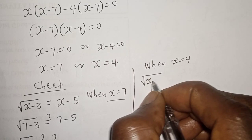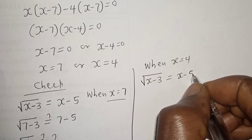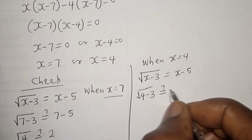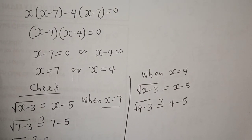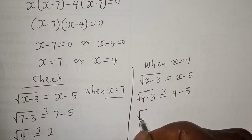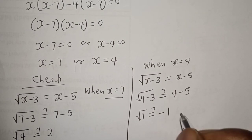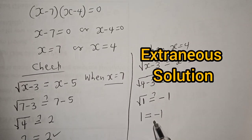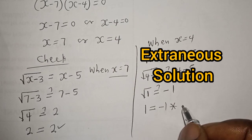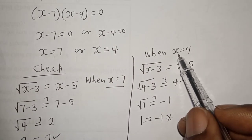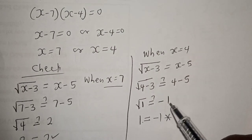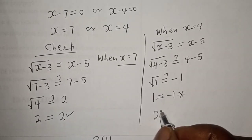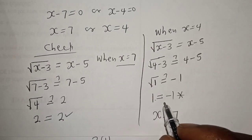Now let's check when S is equal to 4. Square root of 4 minus 3 must equal 4 minus 5. This gives square root of 1 must equal minus 1. But square root of 1 is 1, which is not equal to minus 1. So S equals 4 is an extraneous solution because it does not solve the original equation. Therefore, the only real solution is S is equal to 7.